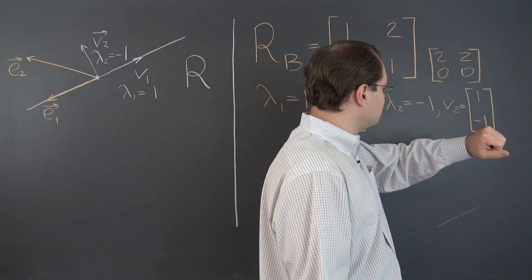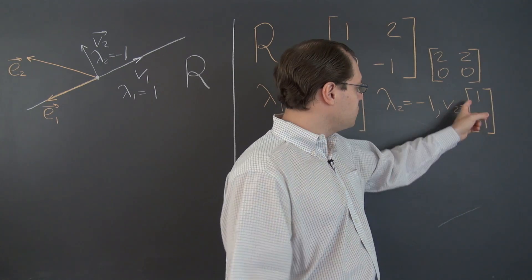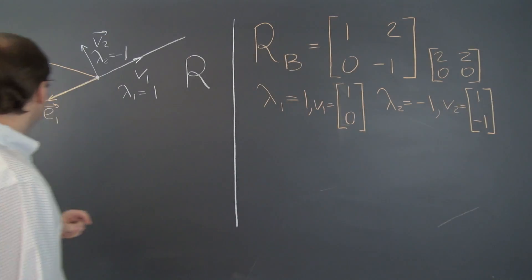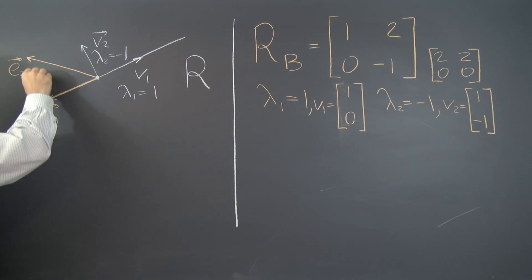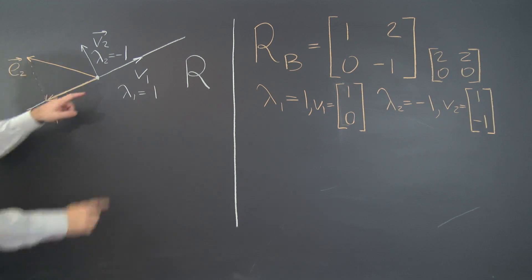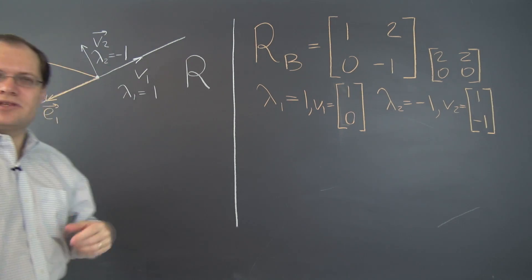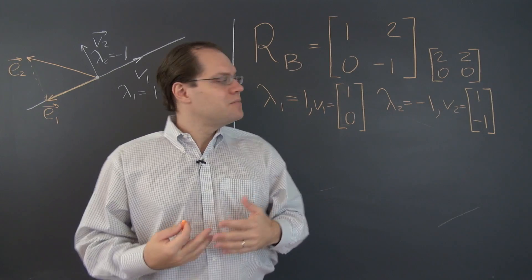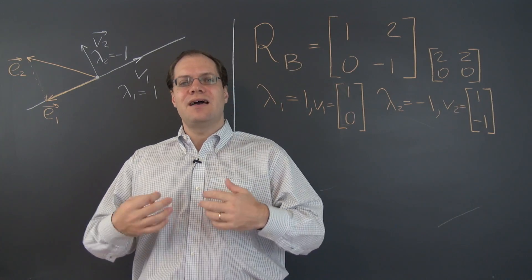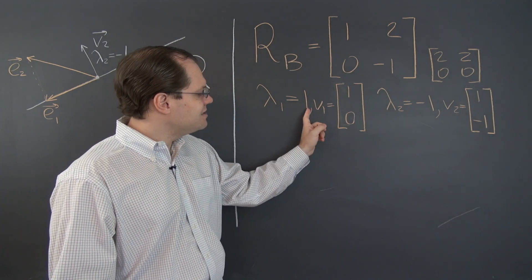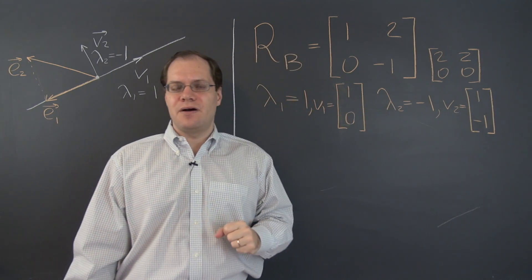For V2, the components (1, negative 1) tell us to take 1 of E1 and subtract E2. E1 minus E2 gives this vector from the origin, which is entirely consistent with the V2 we already knew. So this was our first demonstration that the eigenvalue algorithm in component space delivers the correct eigenvalues and the components of the corresponding eigenvectors.